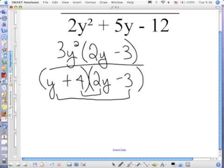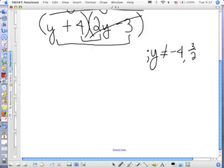We factored. Now we're going to restrict. Only the denominator. What can y not equal? And positive 3 halves. Now what can cancel? And that's it. Now you just write what's left. 3y squared over y plus 4, and your restrictions follow the semicolon.